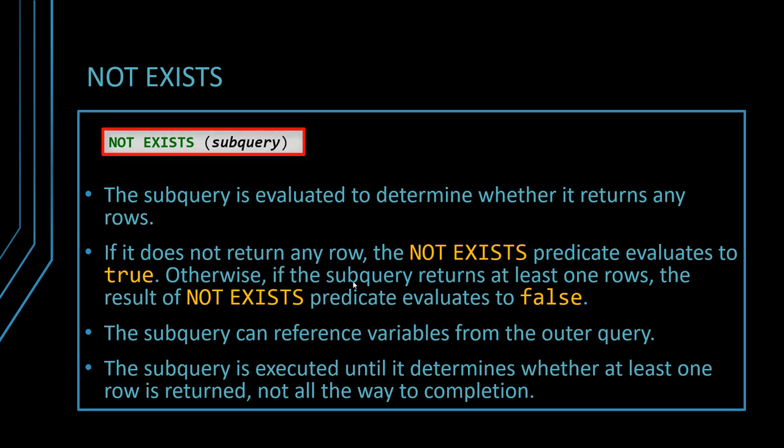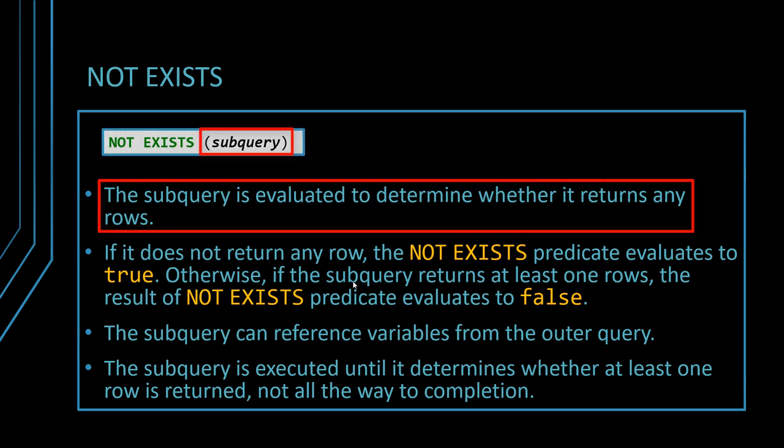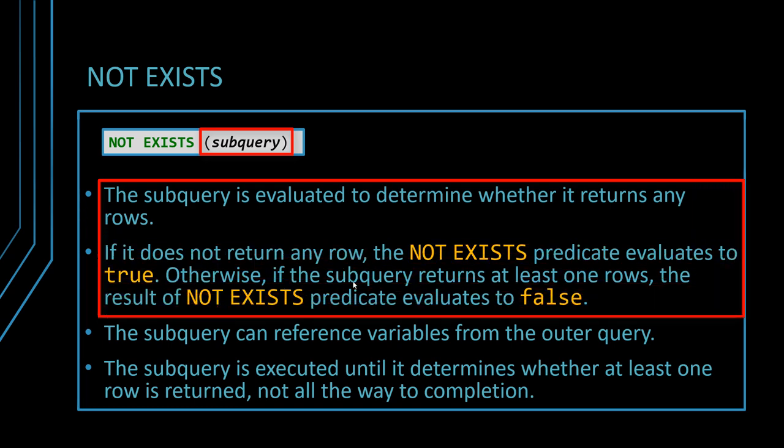Now NOT EXISTS basically what it does is the same thing. It takes a subquery and it evaluates whether records are going to be returned or not by the subquery. So it scans the result set produced by the subquery. However unlike EXISTS it works in the opposite direction because if you don't return any record in the subquery then NOT EXISTS evaluates to true. Otherwise if there is at least one record that is being returned it evaluates to false.